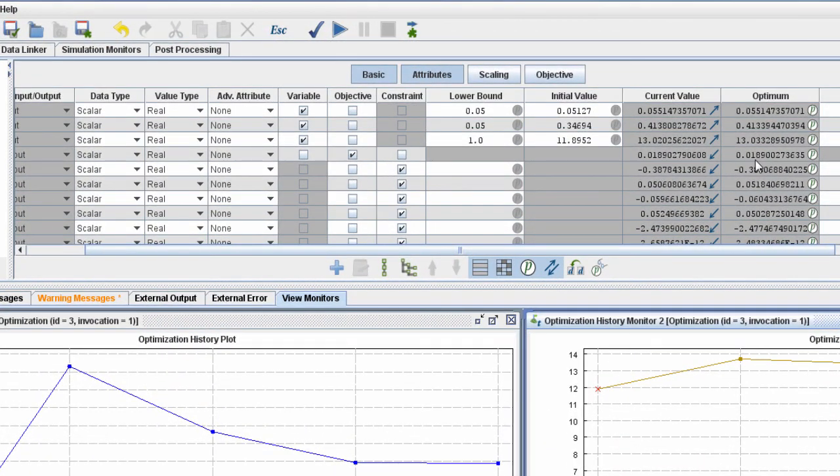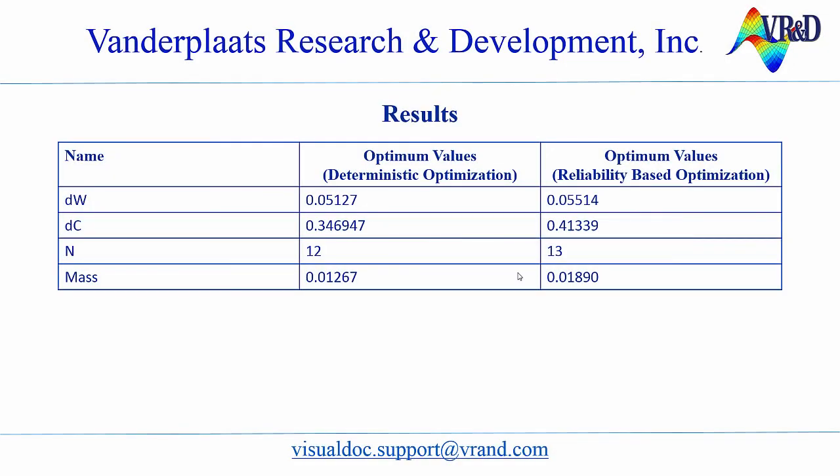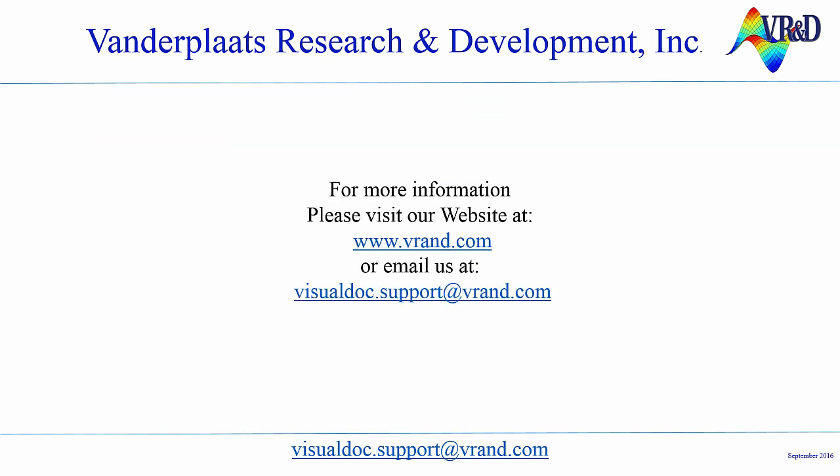The total number of iterations are 4, and the optimum value for the mass is 0.018 pounds. Now I will compare the results obtained from the deterministic and reliability-based optimization. The table displays the optimum values of wire diameter, coil diameter, number of coils, and the mass of the spring in both cases. Due to the consideration of reliability constraints and randomness, the mass of the spring is more in the reliability-based optimum design, and the values of design variables are also higher. This completes the demo. I hope it has helped you get familiar with reliability-based optimization. For more information, please visit our website at www.vrand.com or email us at visualdoc.support@vrand.com. Thanks for watching.